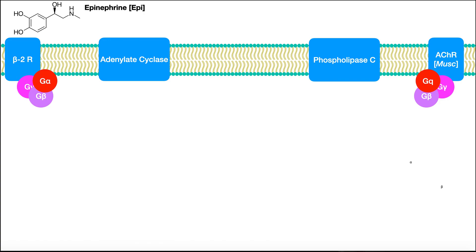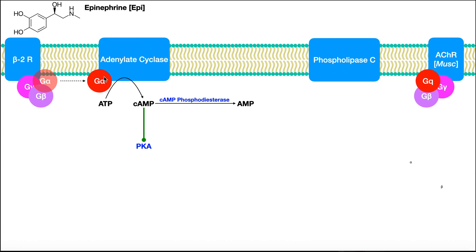For the beta-2 receptor specifically, it normally would bind a catecholamine such as epinephrine, also called adrenaline. When epinephrine binds to this receptor, it's going to trigger one of these subunits of the G-protein to dissociate from the beta-2 receptor, and it will move along the membrane and bind to and activate this enzyme embedded in the membrane — this is called adenylate cyclase.